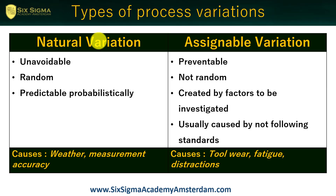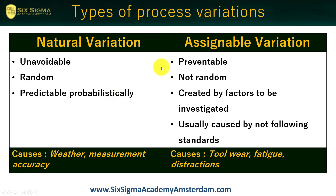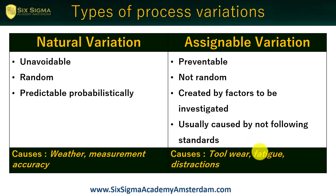In understanding variation, we need to distinguish between two types: natural variation and assignable variation. Natural variation is embedded in nature — it's random, unavoidable, yet predictable. Causes include the weather and measurement accuracy, to name a few. Assignable variation is a completely different story — it is definitely not random and is preventable, because it is created by factors that must be investigated: special situations very often caused by not following standards. Causes can include tool wear, operator fatigue, distraction, and so on.